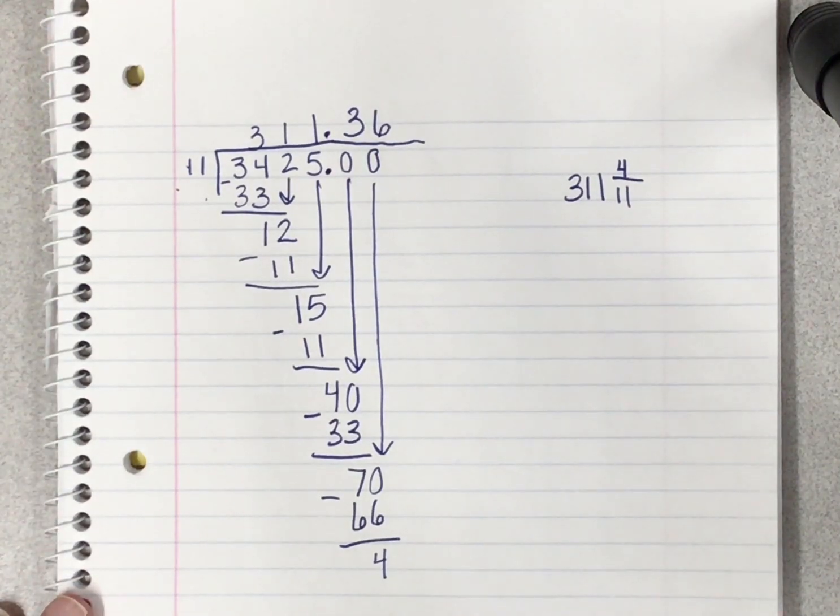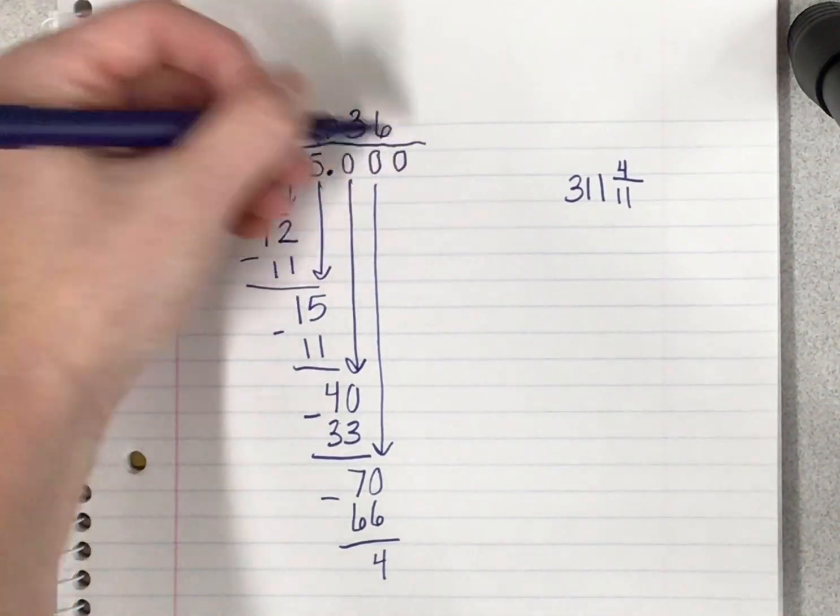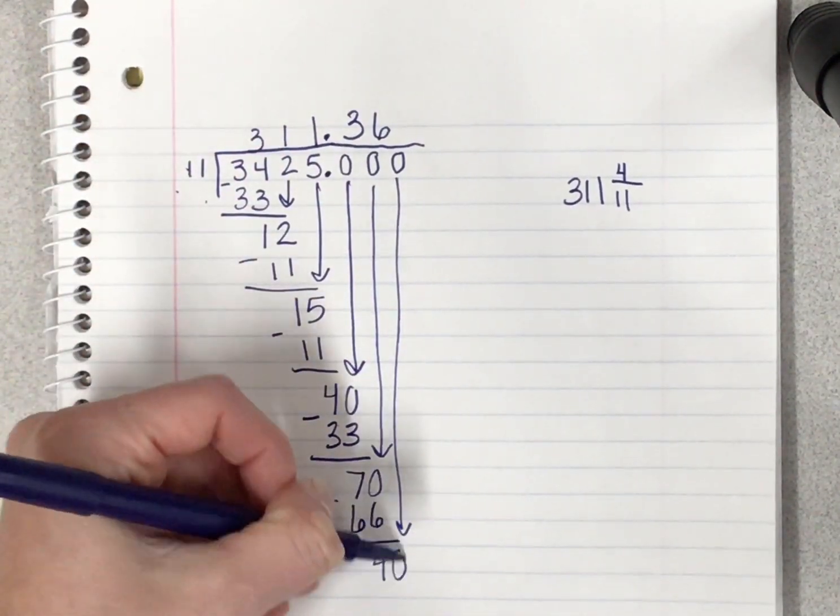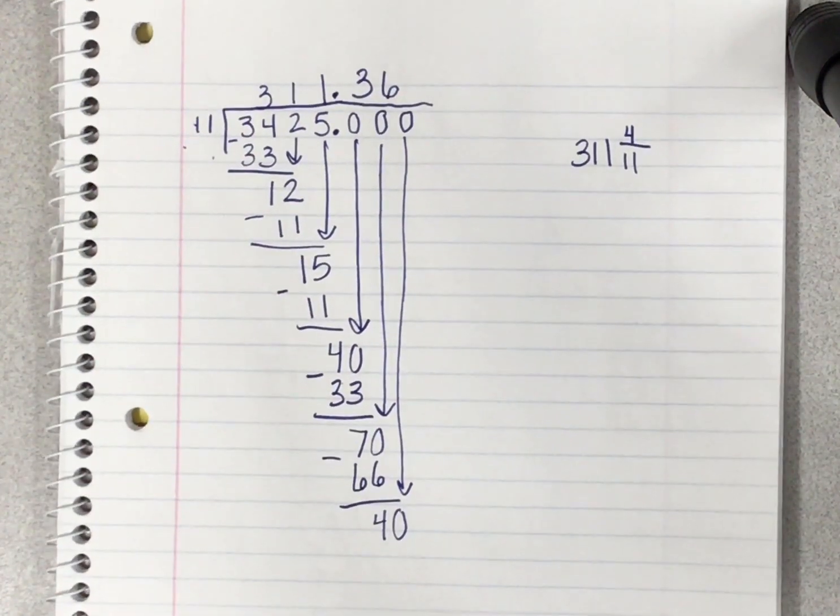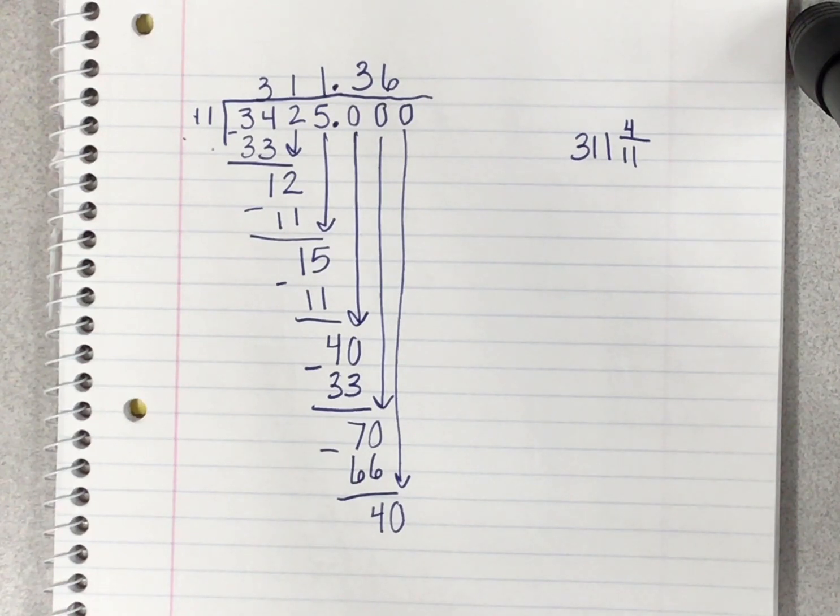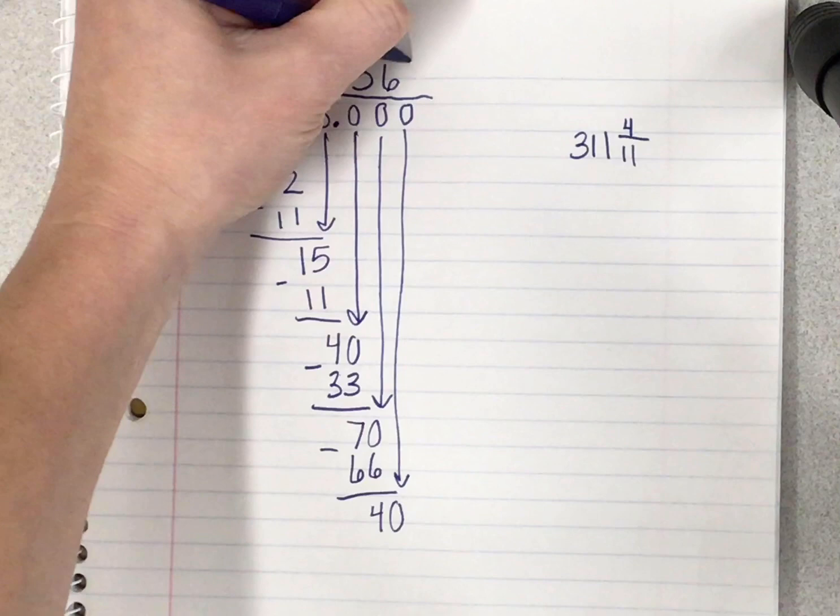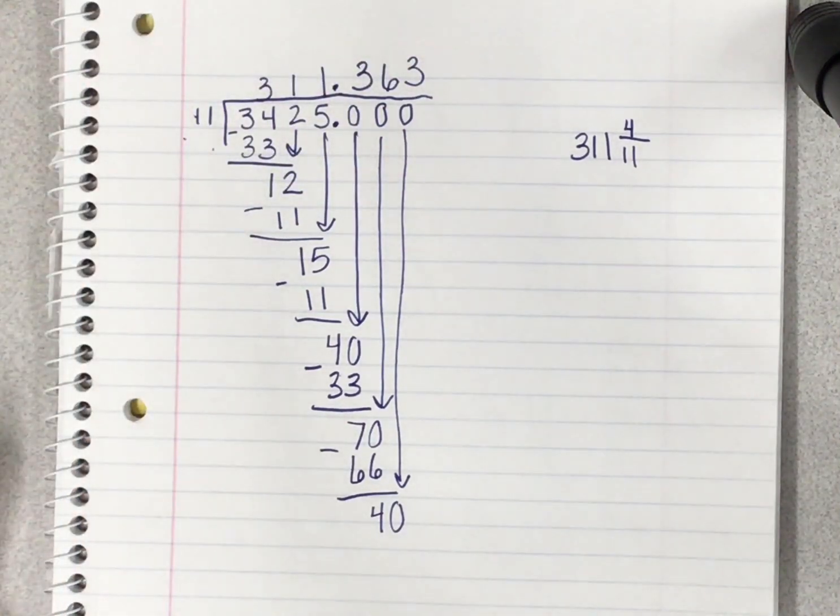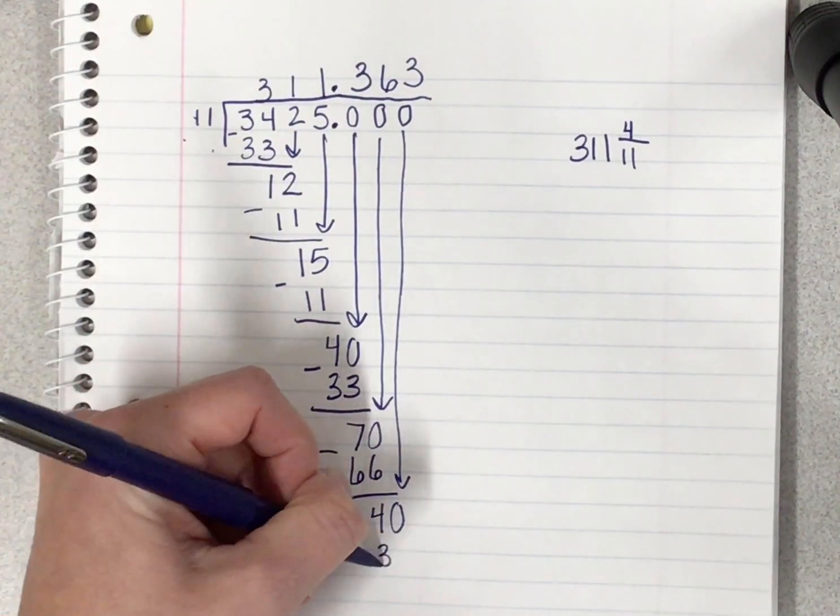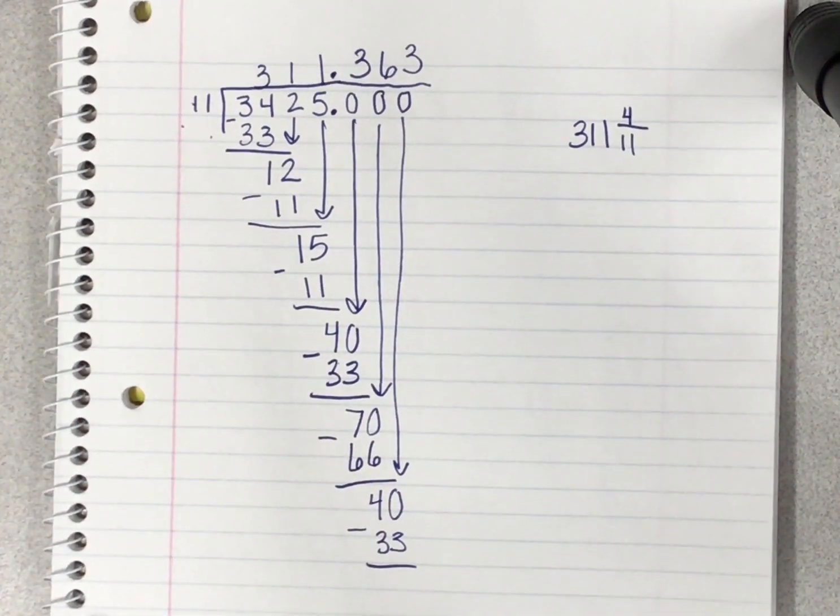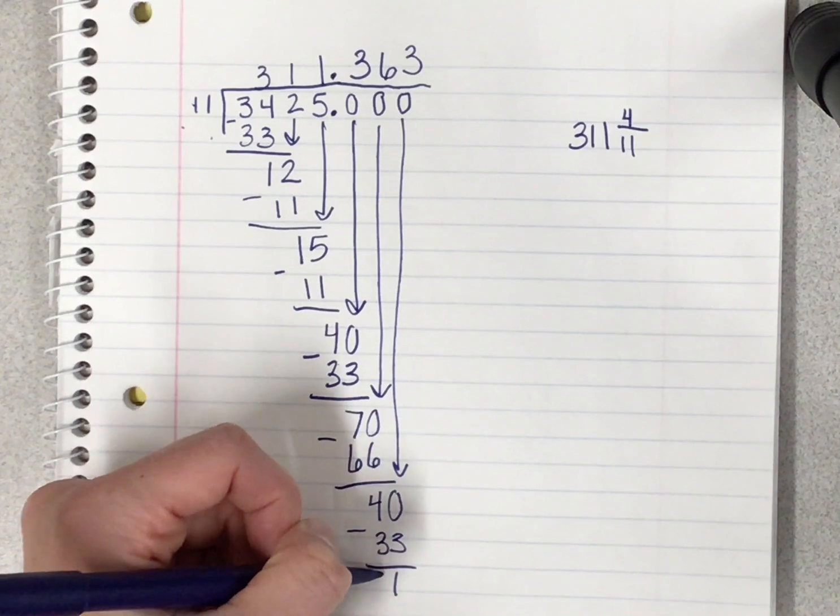I add a zero to continue my problem. I drop my zero down and ask myself how many elevens can go into 40 without going over? Hey, we just saw this fact before. It was 3 times, and 11 times 3 was 33. When I subtract 40 minus 33, I get 7.